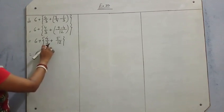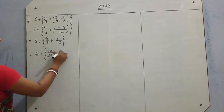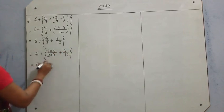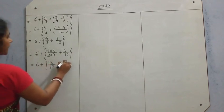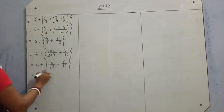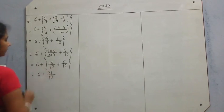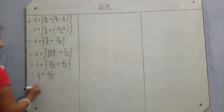Make the 3 into 12 — multiply 4/3 by 4/4, it becomes 16/12. Plus 5/12. So we get 6 plus 21/12. Now 6 means 6/1, so we have to take LCM of 12 here. Multiply by 12.